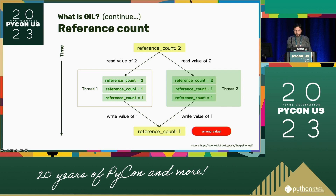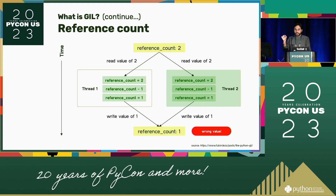Let's see what happens if threads could modify the reference count simultaneously. Suppose we have two Python threads — thread one and thread two — that both reference the variable V, which could be a large data frame. The reference count for V would be two. Now suppose both threads simultaneously remove their reference to V. At the time they go to remove the variable, each thread reads the reference count simultaneously and gets an initial count of two. Each thread would then decrement that count by one, so the final reference count would be one. Unfortunately, the actual reference count should be zero since both threads removed their reference to V. Imagine hundreds of variables staying in memory — it will soon run out of memory.